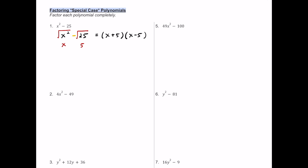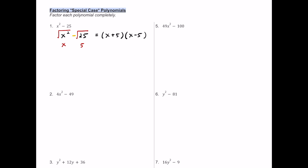If you wanted to check this, you could distribute: you'd get x squared minus 5x plus 5x, so they cancel each other out in the middle, and minus 25, leaving you with x squared minus 25. So it does work — just showing you how to check it yourself.